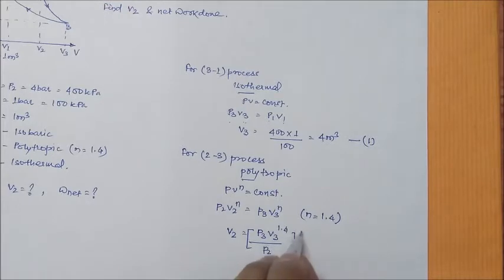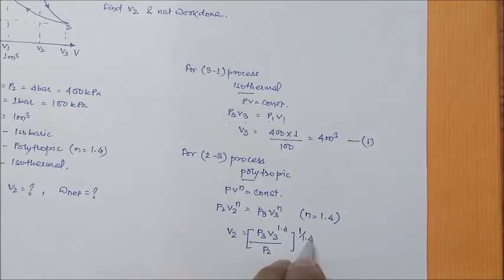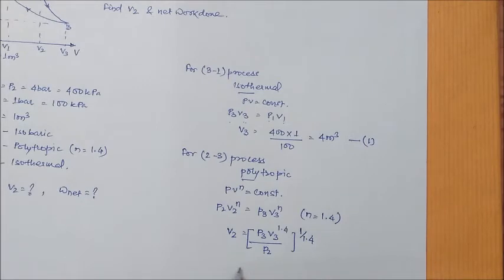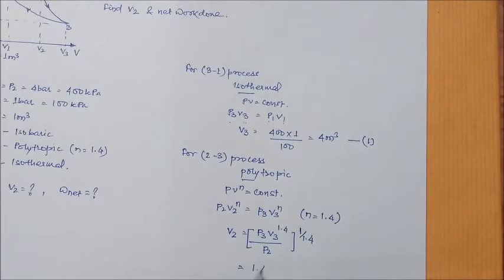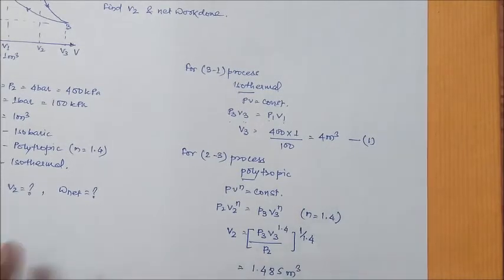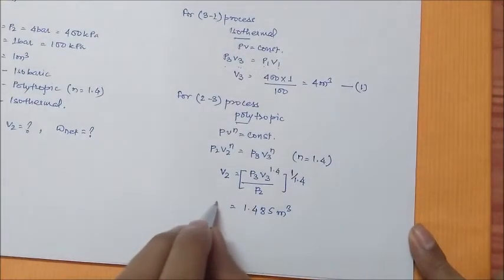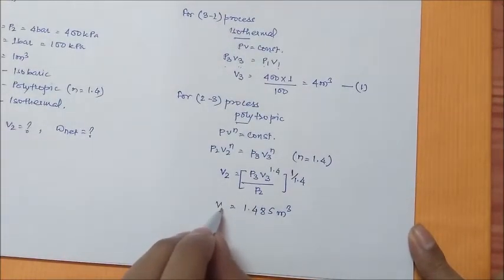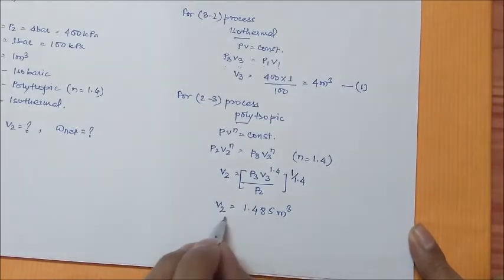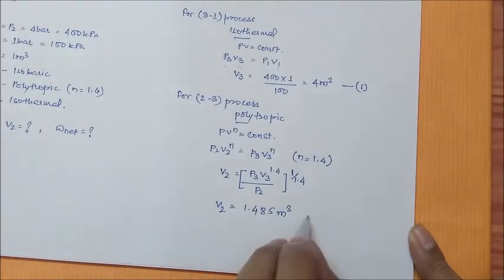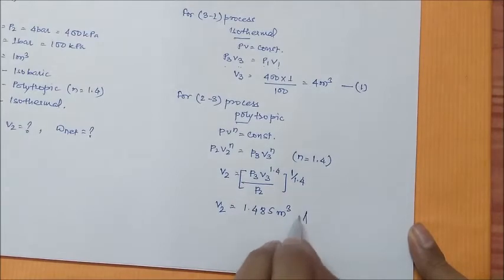So, we can calculate V2 from here: P3V3 to the power 1.4 by P2, the whole raised to 1 by 1.4. The value will be 1.485 meter cube. So now, we have also calculated V2 as 1.485 meter cube. This is your first answer which we want to find out in the question.